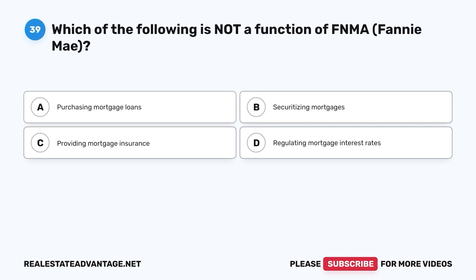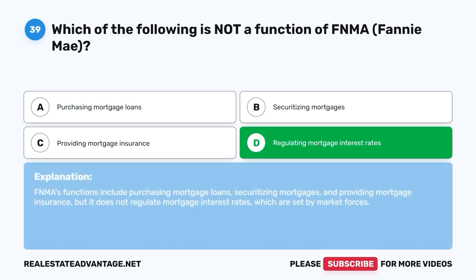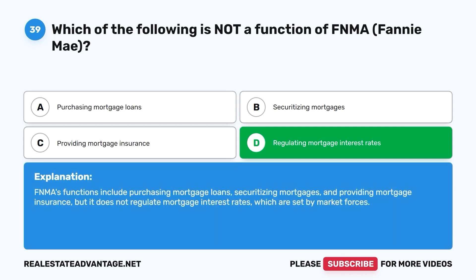Question 39. Which of the following is not a function of FNMA (Fannie Mae)? A. Purchasing mortgage loans. B. Securitizing mortgages. C. Providing mortgage insurance. D. Regulating mortgage interest rates. The correct answer is D. FNMA's functions include purchasing mortgage loans, securitizing mortgages, and providing mortgage insurance, but it does not regulate mortgage interest rates, which are set by market forces.